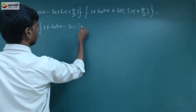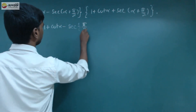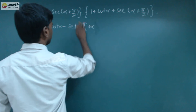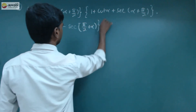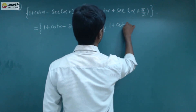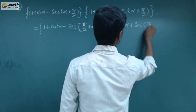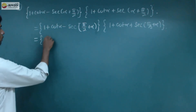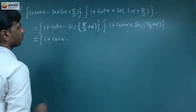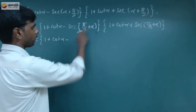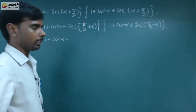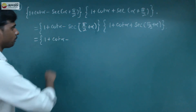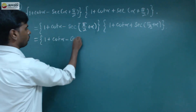You have to check this: secant of pi by 2 plus alpha. You have to change the value. So that's equal to 1 plus cot alpha minus secant of 90 plus theta. Here it is pi by 2 plus alpha. So if you look at 90, then 1 is an odd number.